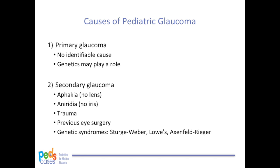Pediatric glaucoma can also be secondary to another condition. Aphakic glaucoma occurring after pediatric cataract extraction is the most common form of secondary pediatric glaucoma. Aniridia, which is the absence of an iris, eye trauma, and previous eye surgery are also associated with a higher incidence of glaucoma. Several rare genetic syndromes are associated with glaucoma such as Sturge-Weber, Lowe's, and Axenfeld-Rieger. Not all patients with these conditions will develop glaucoma, but they are at higher risk and should be monitored regularly. You should consider Sturge-Weber syndrome in a child born with a large port wine stain on their face, also known as a capillary malformation.